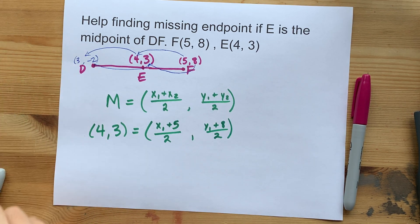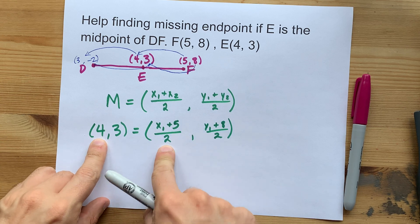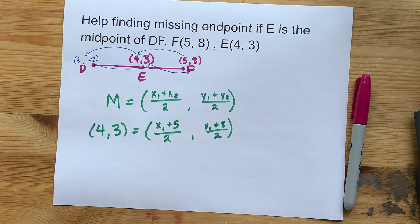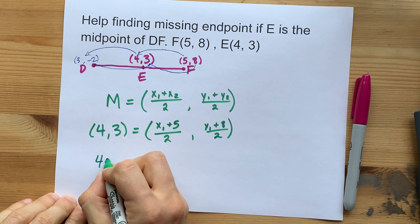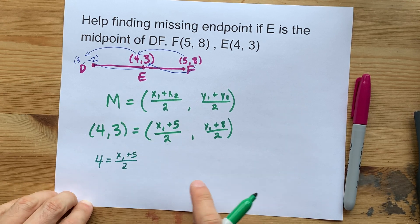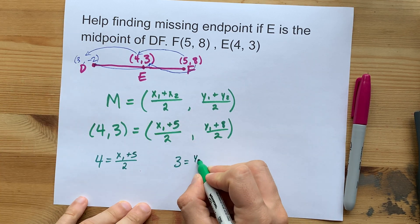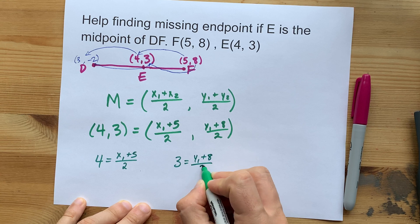From this point you can break this up into two separate equations. The first coordinate here, four, and the first coordinate here are supposed to be the same. So 4 equals x1 plus 5 over 2 and similarly 3 is the second coordinate here, y1 plus 8 over 2.